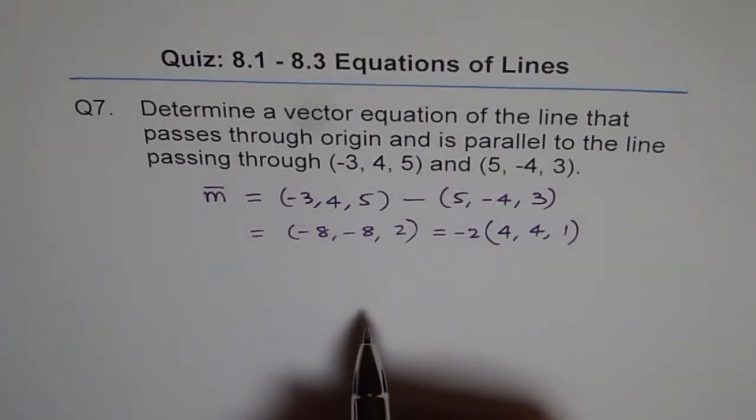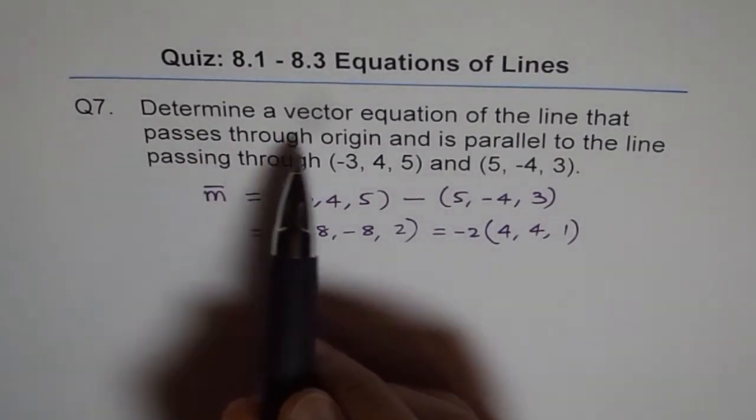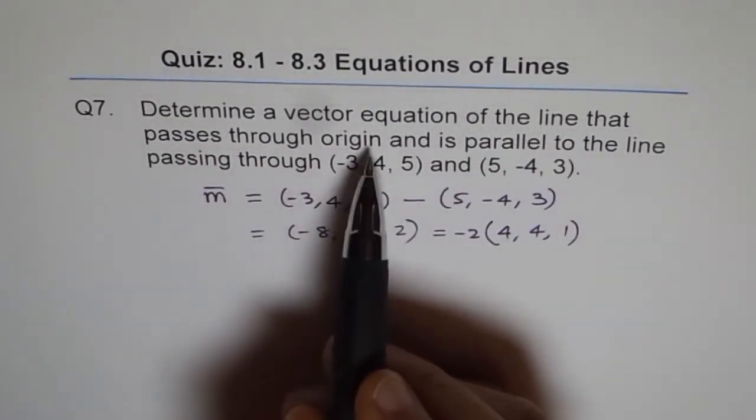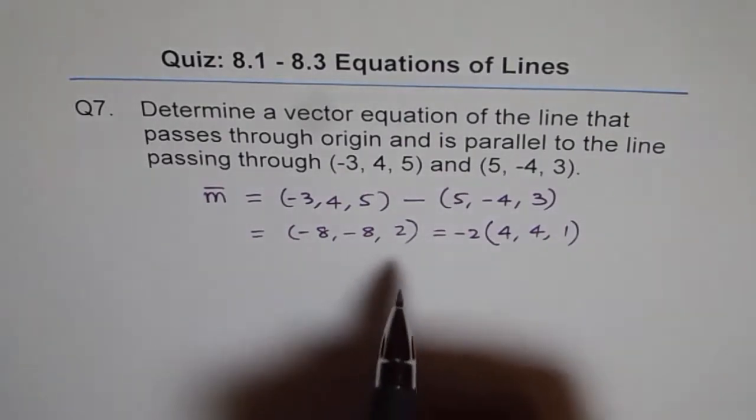So that becomes my direction vector. And since the line passes through origin, the point is (0, 0, 0).